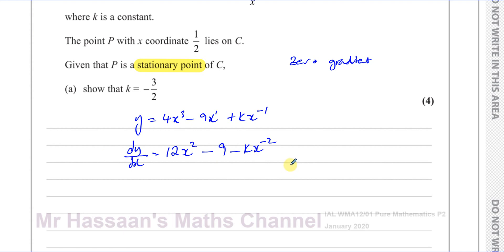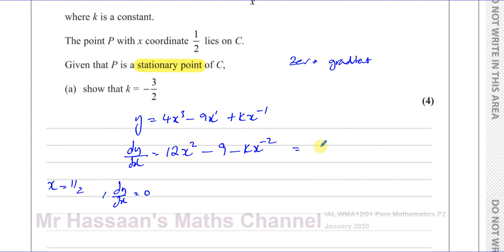We know that when x equals one half, dy/dx is equal to zero. So if I replace x in the gradient function with one half, the gradient function should equal zero. Let me first rewrite dy/dx as 12x squared minus 9 minus k over x squared. This is because k times x to the power of minus 2 is the same as k times 1 over x squared, which is k over x squared.